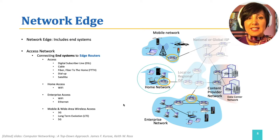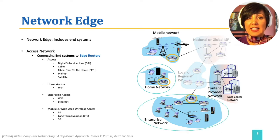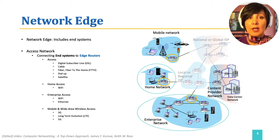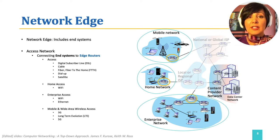If the end system is within a home, end systems are usually connected to the edge router through Wi-Fi. If the end system is within an enterprise, access is usually provided with Wi-Fi or Ethernet. If the end system is on the go, wireless and mobile infrastructure provided by the cellular network provider provide access through 3G, LTE, or 5G technologies.